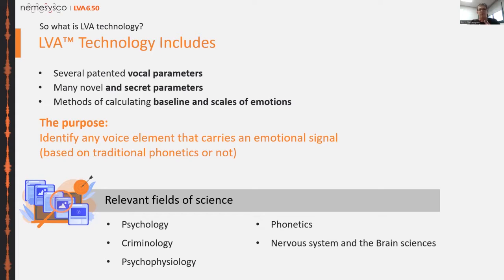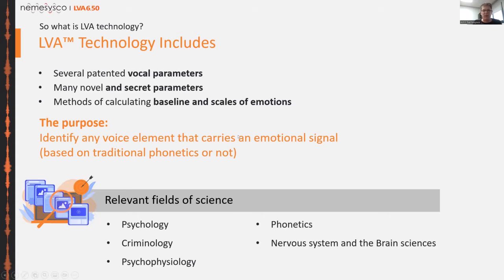In a similar way to polygraph, we also want to understand the homeostasis of the person — their natural state and where they feel comfortable. Emotional homeostasis is more complicated because people differ: some are more emotional, some more logical, some more stressed. But the concept of detecting homeostasis and deviations from it is the same for polygraph as for LVA. LVA has a mixture of psychology, criminology, psychophysiology, phonetics, and of course the nervous system and brain sciences — all fused together through many years of expert collaboration.